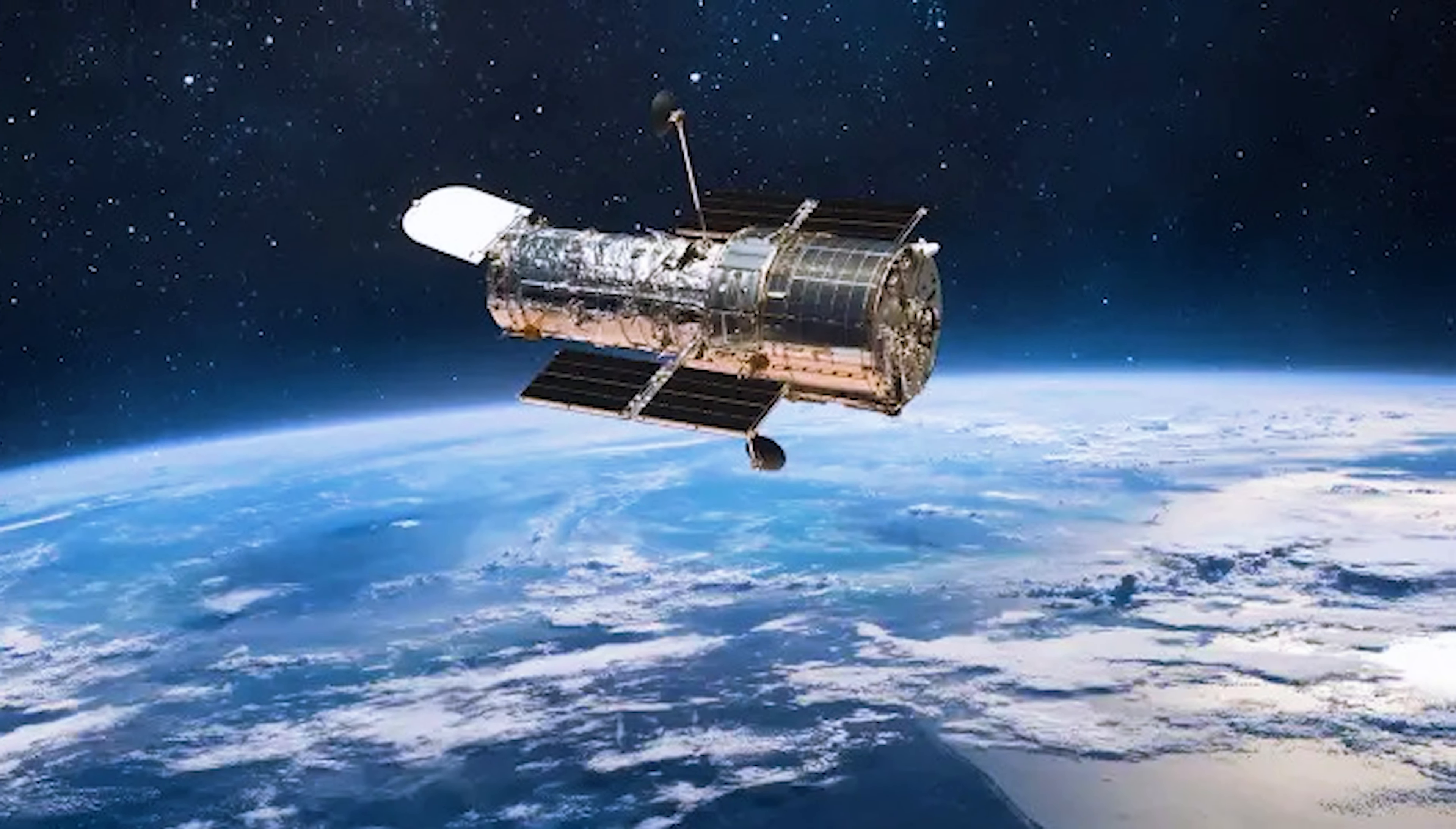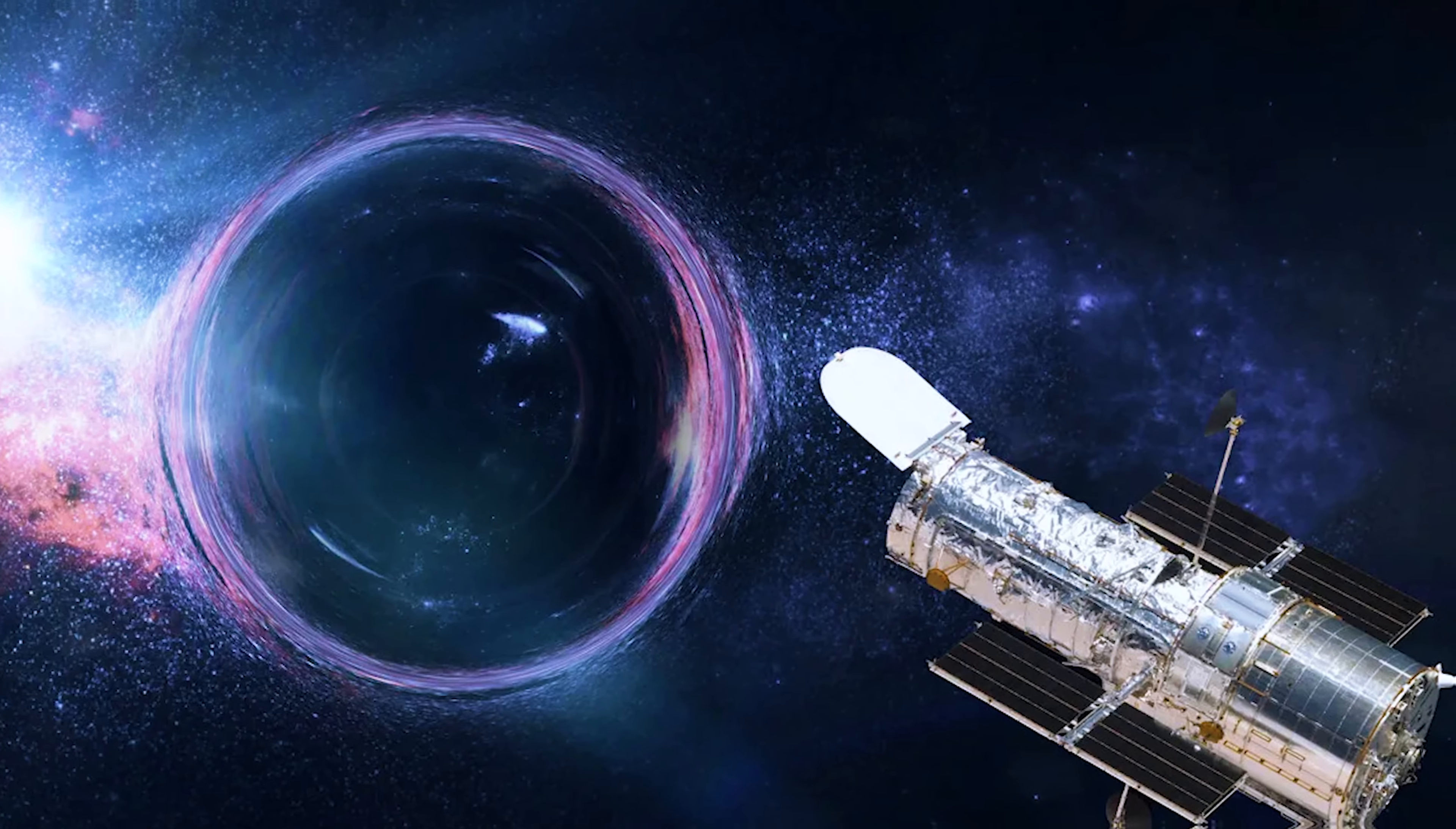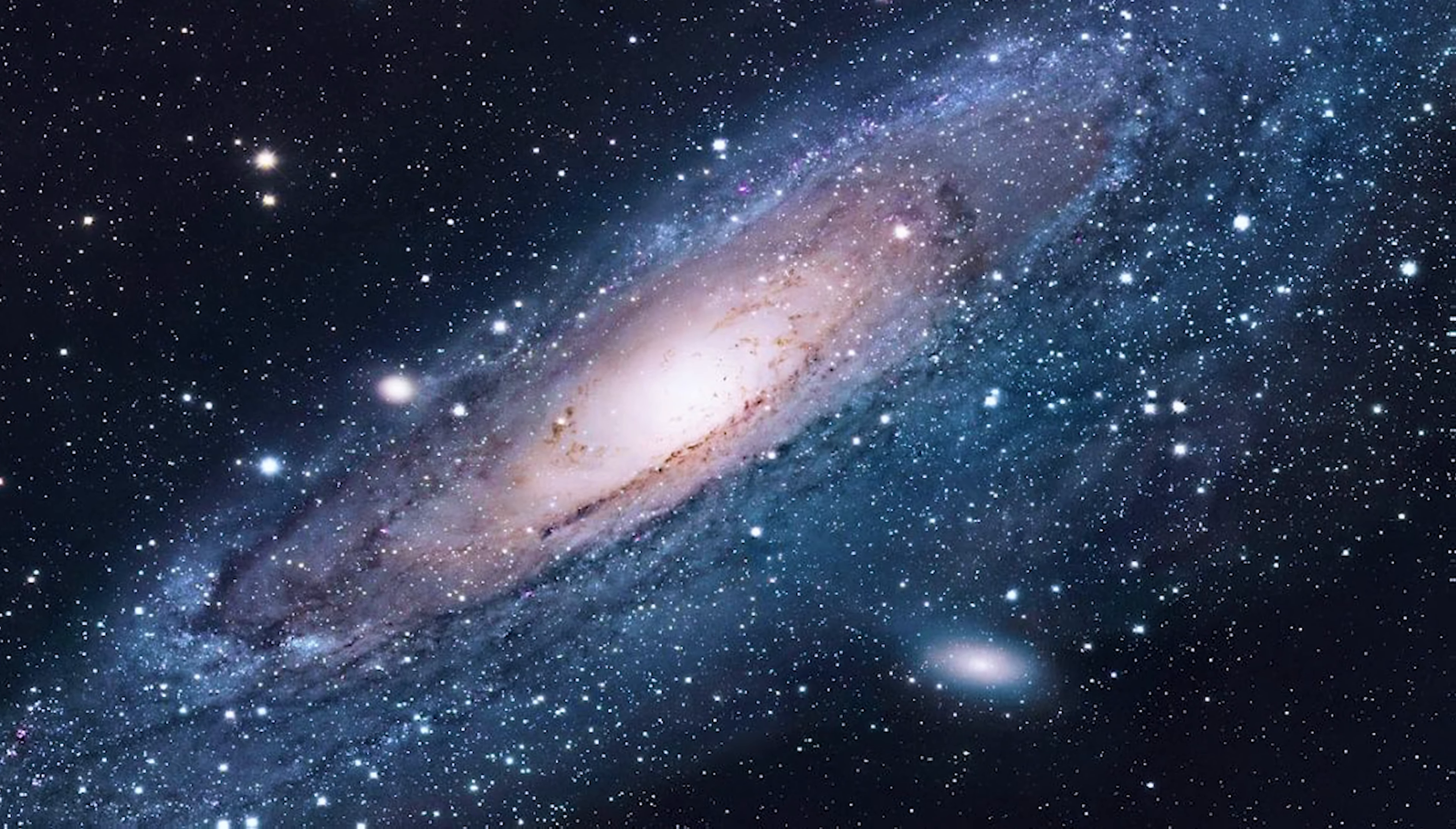Hubble was finally put into space in 1990, but its main mirror had been ground wrong, which caused a spherical aberration and made the telescope less useful. In 1993, a service mission fixed the optics so that they worked the way they were supposed to.